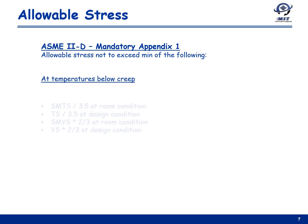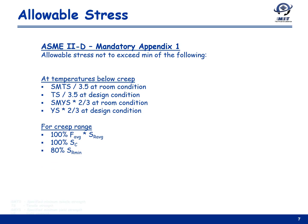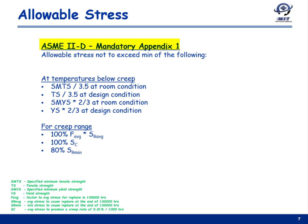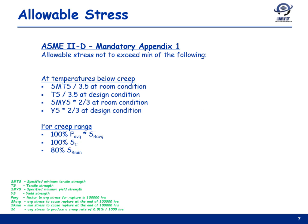In this slide we will see the code criteria behind allowable stresses. ASME BPVC material properties are listed in Section 2, Part D, mandatory Appendix 1, Table 1-100. Material properties selected for temperatures below the creep range are tensile strength and yield strength. The allowable stress shall not exceed the minimum of the following: specified minimum tensile strength divided by 3.5 at room temperature, or tensile strength divided by 3.5 at design temperature, or specified minimum yield strength multiplied by 2/3 at design condition.